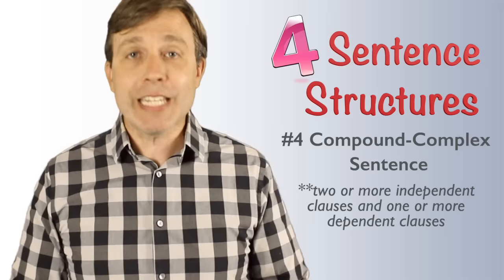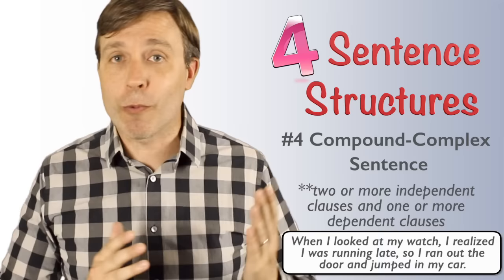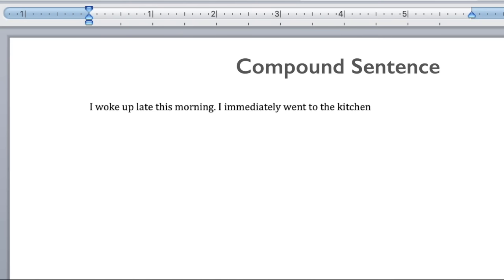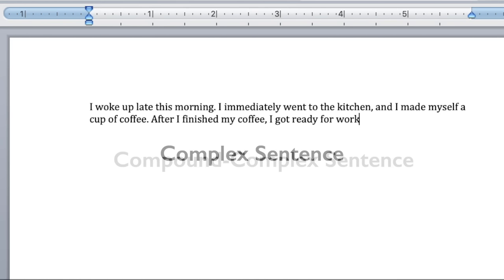Then we have compound complex sentences, which is when you have two or more independent clauses plus one or more dependent clauses. And let's continue. When I looked at my watch, I realized I was running late. So I ran out the door and jumped in my car. So let's review our story using all of those different sentence structures. I woke up late this morning. I immediately went to the kitchen and I made myself a cup of coffee. After I finished my coffee, I got ready for work. When I looked at my watch, I realized I was running late. So I ran out the door and jumped in my car.